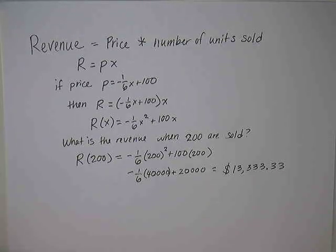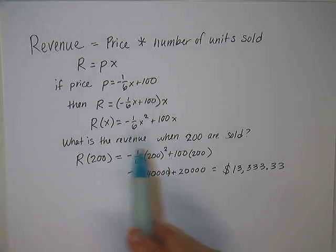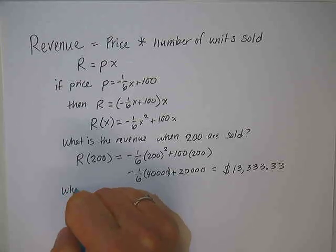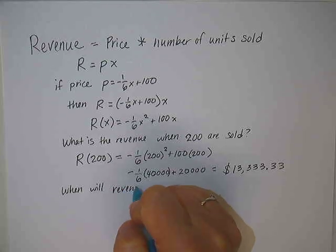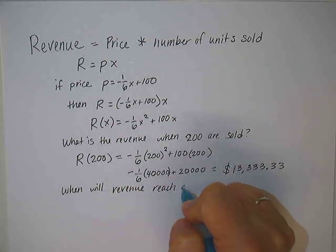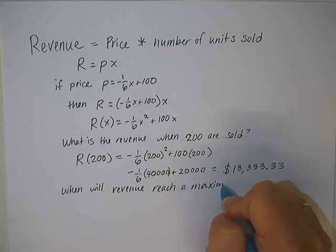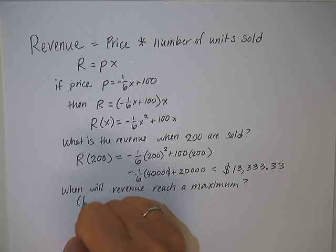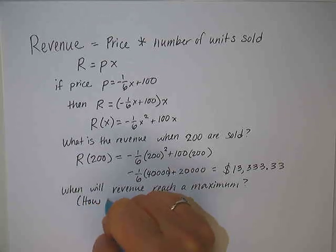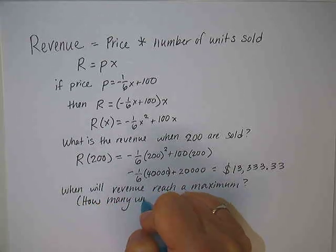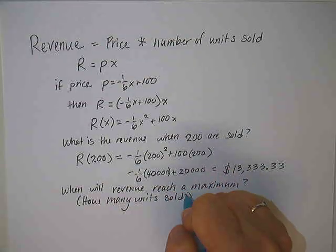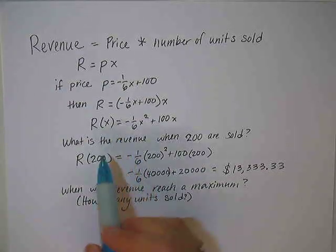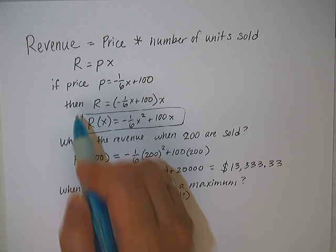We can also use this function to help us figure out what price would help us to obtain the largest revenue. So that would be finding a maximum. Since this is a quadratic, when will revenue reach a maximum? In other words, how many units must be sold?